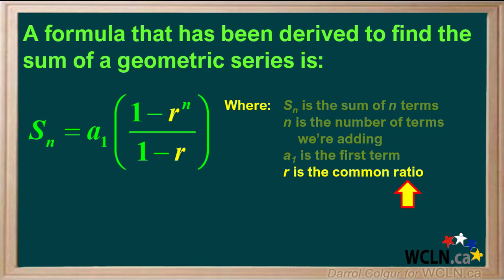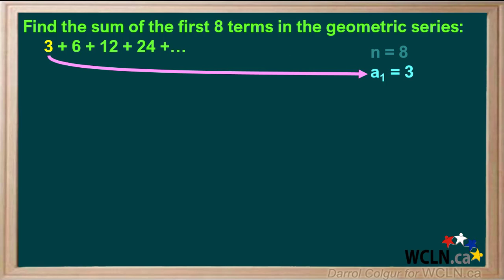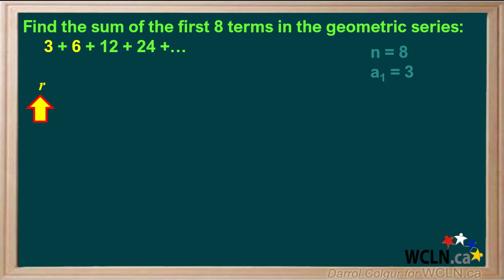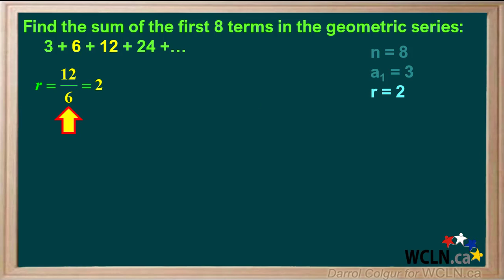Let's do an example where we use this formula to find a sum. We are asked to find the sum of the first eight terms in this geometric series. Because we are adding up eight terms, we can state that N equals 8. We will also note that A1 equals 3. We can calculate the common ratio R by dividing the second term by the first term, which is 6 divided by 3, which comes out to 2. So R equals 2. We confirm this by dividing the third term, 12, by the second term, 6, and we also get 2.